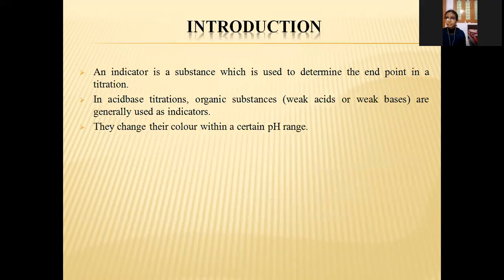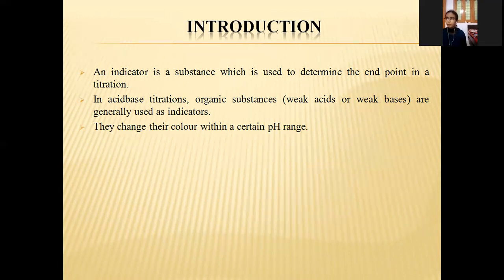Introduction: an indicator is a chemical substance used to determine the end point, mainly used in the titration process. In titration, we take a known concentration solution in the burette — that is the titrant — and the titrate of unknown concentration is taken in the conical flask.